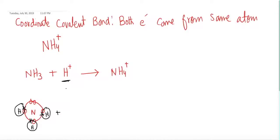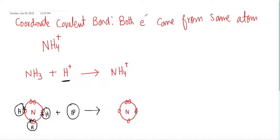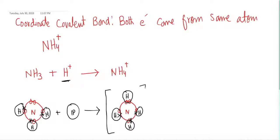The H+ ion has no electrons — hydrogen has one electron but in H+, only the proton is present inside the nucleus, so H+ has no electron. However, this H+ can make a bond with the lone pair present on the nitrogen. The nitrogen's outermost shell has five electrons, and the three hydrogens form three covalent bonds. The H+ makes a bond with the two electrons called the lone pair.